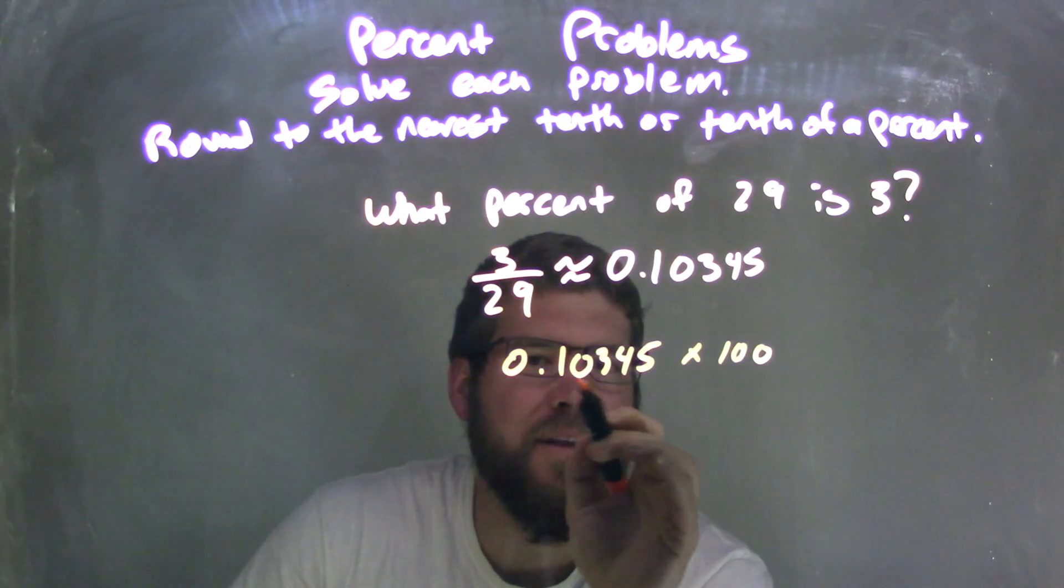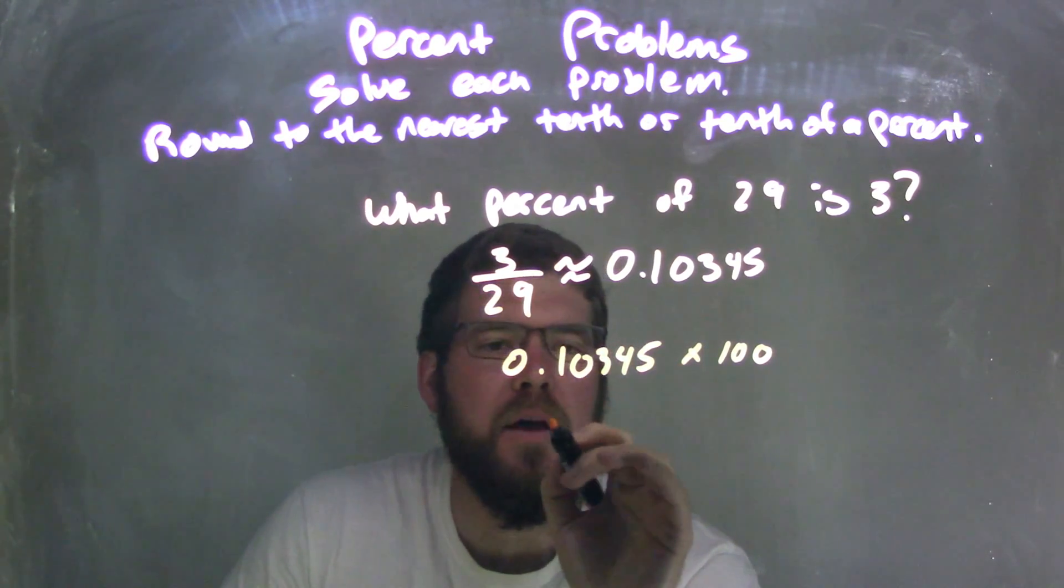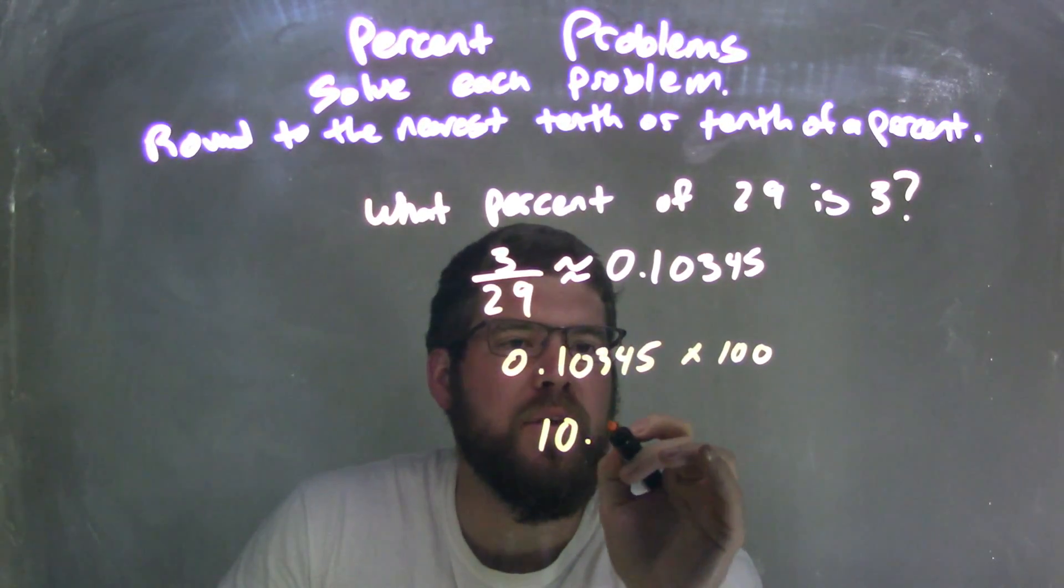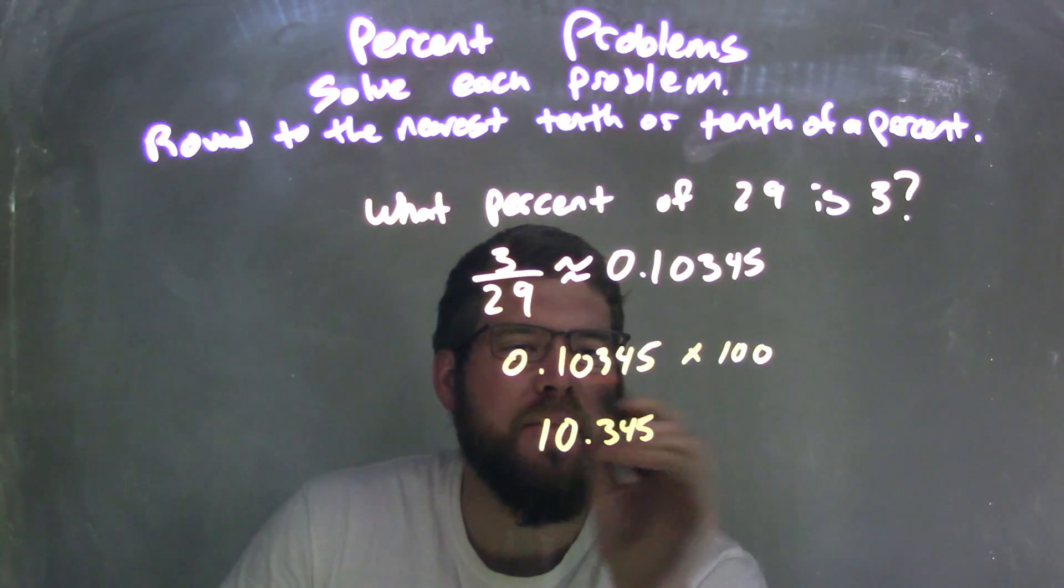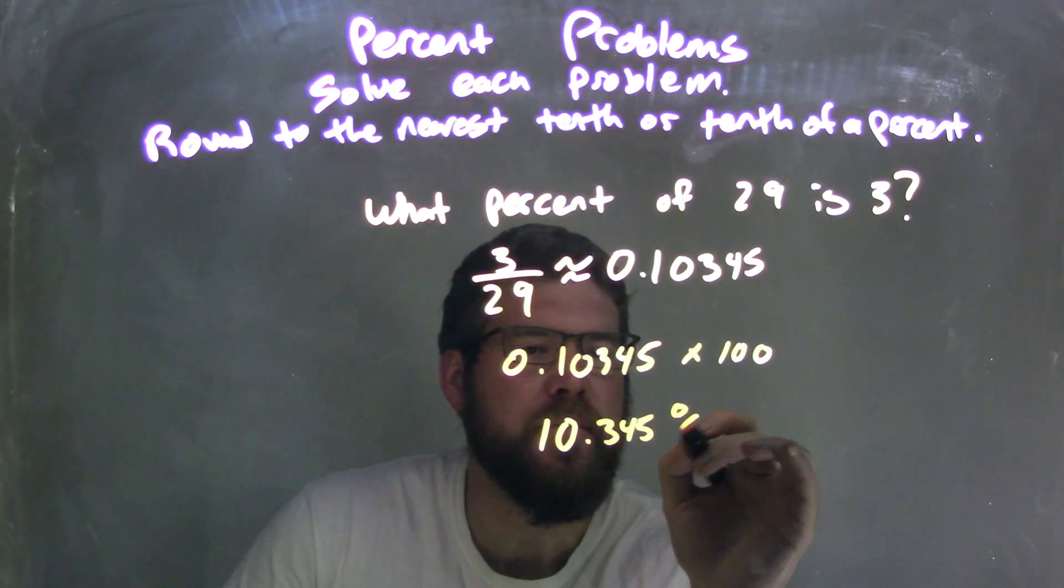What I can do is move the decimal place two points over. So I have 10.345, and this is an approximate answer percent.